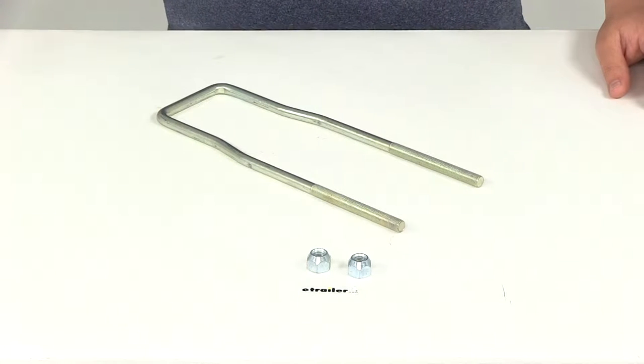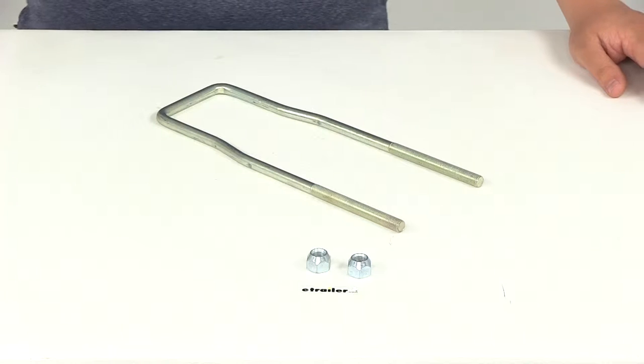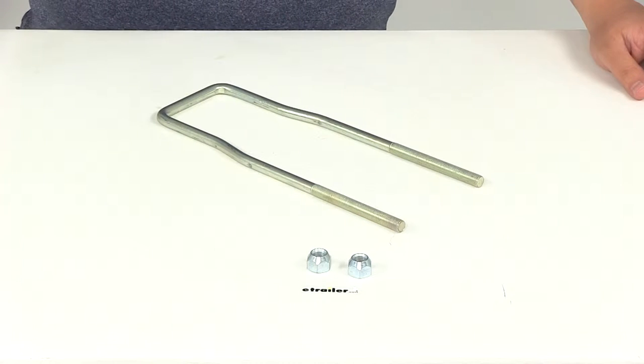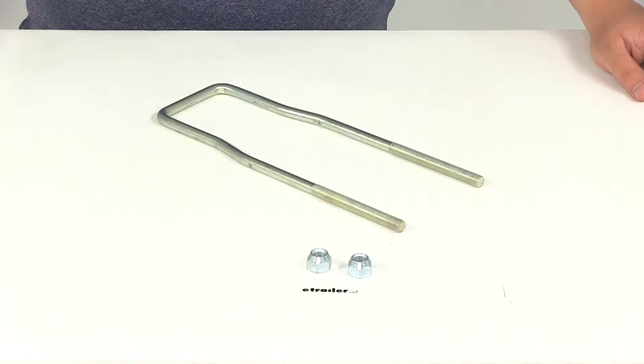Today we're going to be taking a look at part number CE22011Z-11050-2. This is the CE Smith spare tire carrier for trailers.